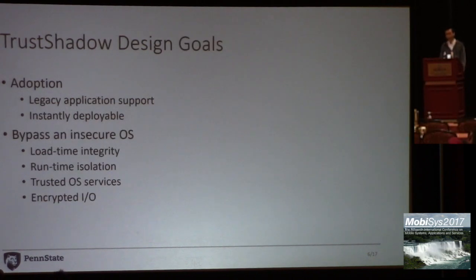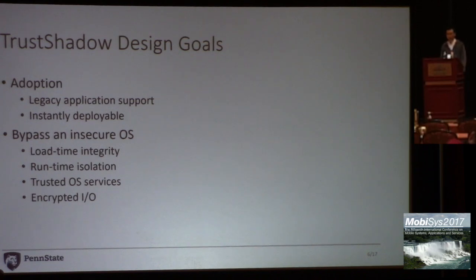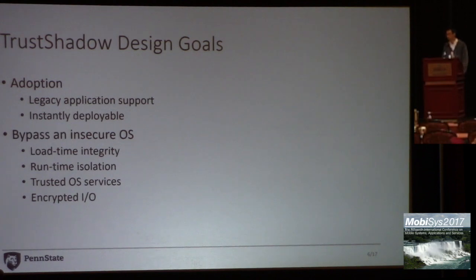In this work, we propose TrustShadow, a new solution specifically designed for ARM devices. We designed TrustShadow without relying on virtualization hardware and requiring no modification to the application. As a result, our solution can be instantly deployed. In terms of security, we ensure that the application runs in isolation from the untrusted operating system and is loaded into memory correctly. We also ensure that the return values of the operating system calls are trusted.